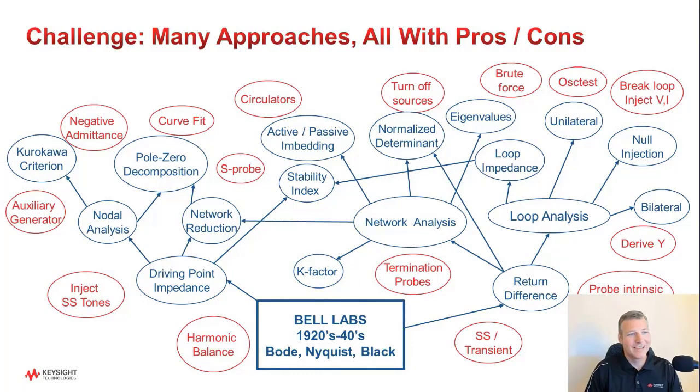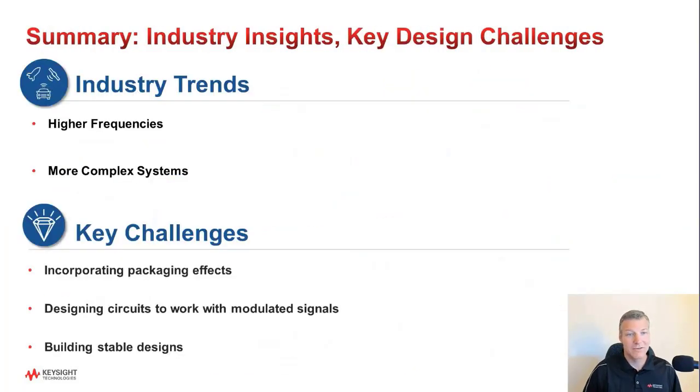And if you get your product back and it oscillates, it's really hard to fix that, and there's no chance it's going to work well in a more complex, larger system or application. So that's challenge number three. Well, that concludes my section. So to summarize, I talked about two macro trends taking place across the wireless industry, higher frequencies and more complex systems. And I described how these trends are leading to challenges with incorporating packaging effects, designing with modulated signals, and building stable circuits. In the next session, my colleague Joe Civello is going to talk about how PathWave ADS 2022 is going to address these challenges.